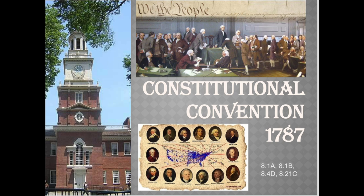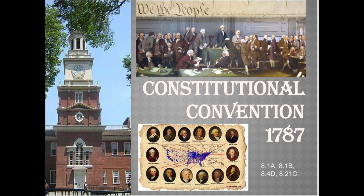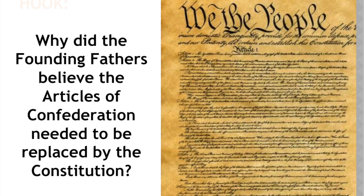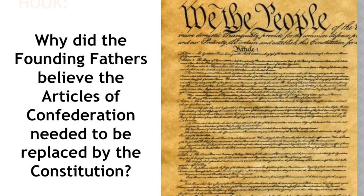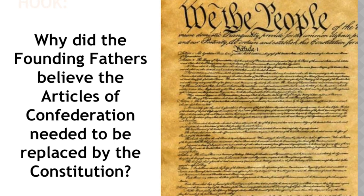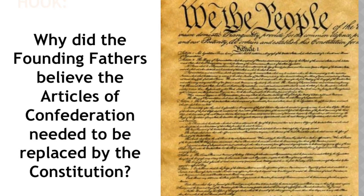Here we are at the Constitutional Convention — it's the summer of 1787. What are we doing at this meeting? We are trying to revise the Articles of Confederation. Our Founding Fathers are going to meet here to try to make some changes to the Articles of Confederation. So why did the Founding Fathers believe that the Articles of Confederation, which was our first type of government, needed to be replaced by a new constitution?